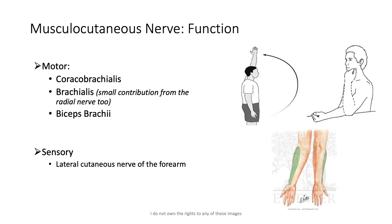The musculocutaneous nerve has both motor and sensory function. Its motor function comes from innervation of the coracobrachialis, brachialis, and biceps brachii muscles. It is also worth noting that the brachialis muscle receives a small contribution from the radial nerve. Coracobrachialis is responsible for forward flexion of the arm at the shoulder joint, and brachialis is responsible for flexion of the forearm at the elbow joint. Biceps brachii performs powerful supination and also has a degree of flexion of the arm at the shoulder joint from the long head of the biceps tendon.